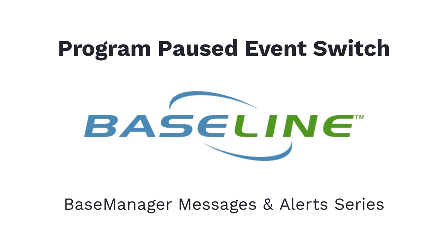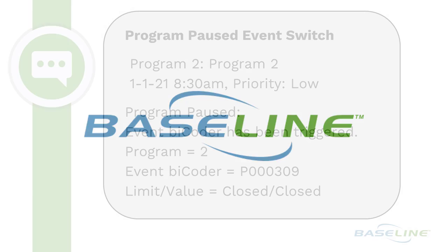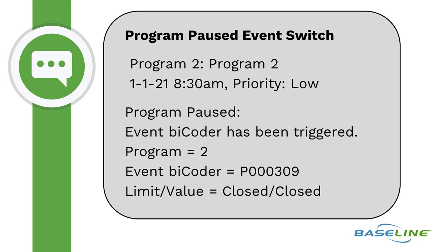The message reads: Program Paused Event Switch, Program 2. January 1st, 2021 at 8:30 AM. Priority: Low. Program Paused Event Bicoder has been triggered. Program equals 2, Event Bicoder equals P000309, Limit versus Value equals Closed versus Closed.